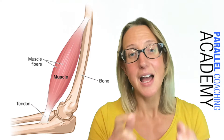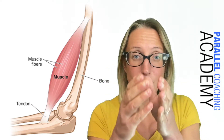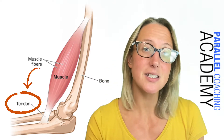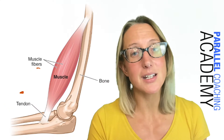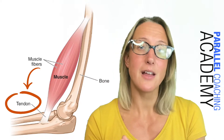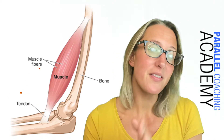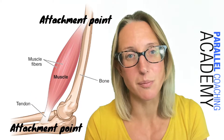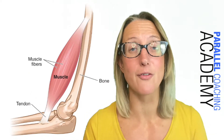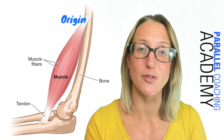All of these muscle fibers stack up and accumulate, running down towards a tendon. The tendon is this thick connective tissue that then attaches the muscle to the bone. The point whereby that tendon attaches onto the bone is called an attachment point, and depending on which part of the muscle it's on, it will either be called an origin or an insertion.